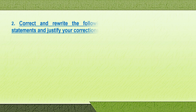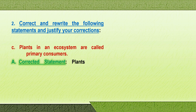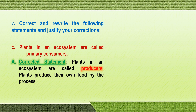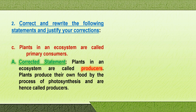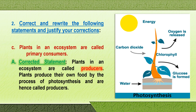Third sentence: plants in an ecosystem are called primary consumers. Corrected statement: plants in an ecosystem are called producers, because plants produce their own food by the process of photosynthesis and are therefore called producers. The process of photosynthesis uses energy from the sun, carbon dioxide, water, and chlorophyll — the green pigment in leaves — to form food in the form of the sugar glucose. During this process, oxygen is released.